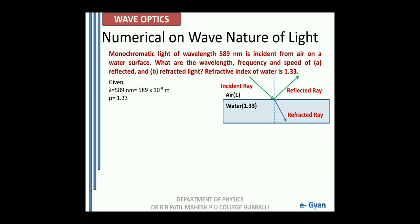In the given condition, we have wavelength lambda equal to 589 nanometer, which can be written as 589 into 10 raised to minus 9 meter, and mu, that is refractive index, is equal to 1.33. We need to understand that the frequency of the light does not change due to the phenomenon of reflection or refraction. So frequency remains unaltered.